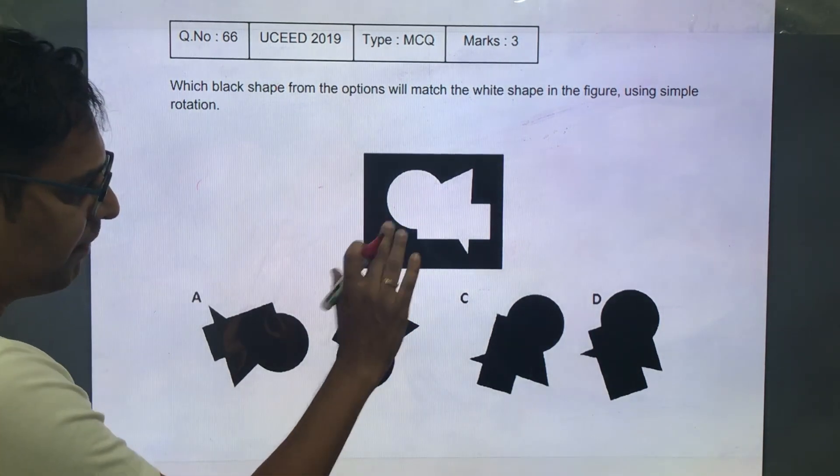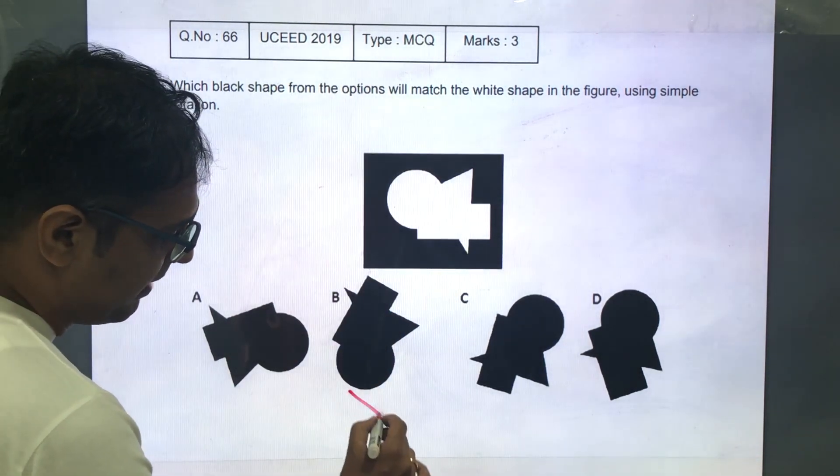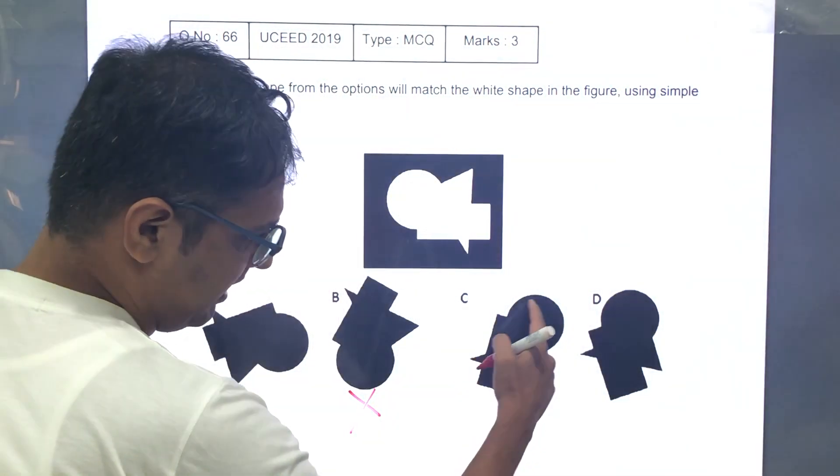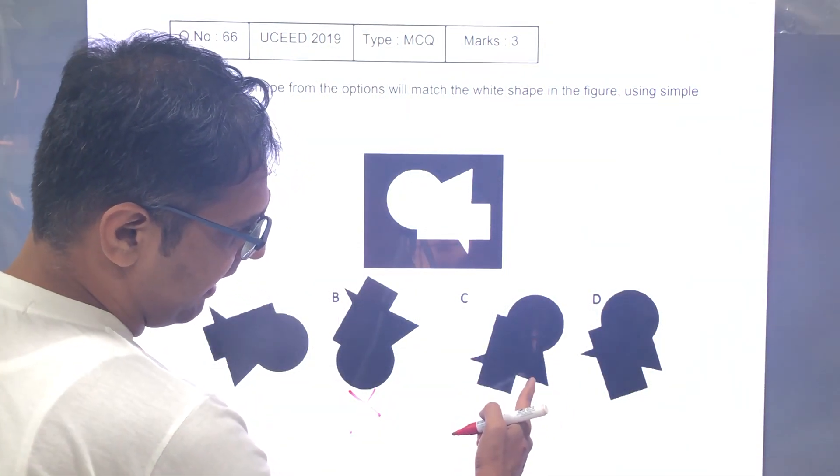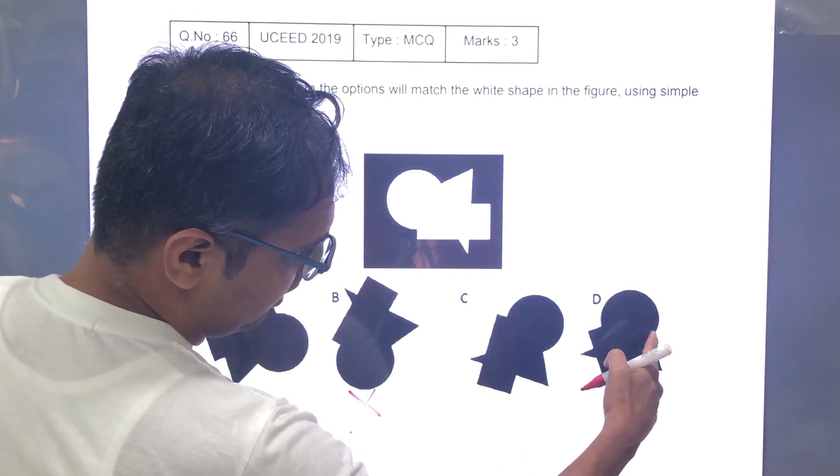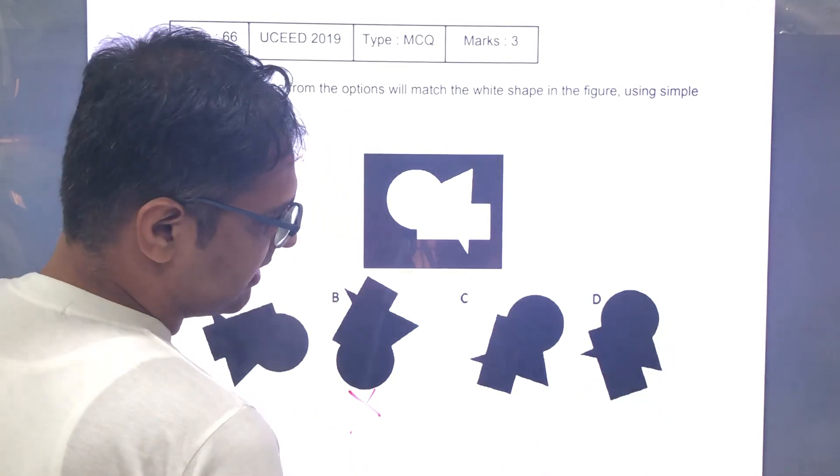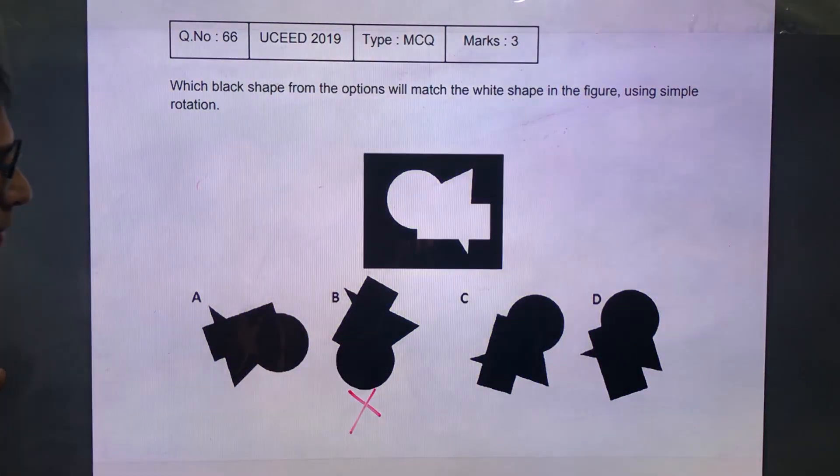So actually this will have to be flipped over to match this. So B is eliminated. In C in the clockwise direction there is a triangle. In D again in the clockwise direction from the circle there is a triangle. So A, C and D are still possible.